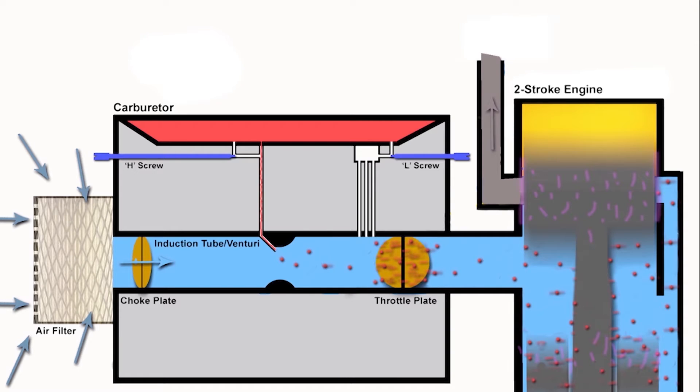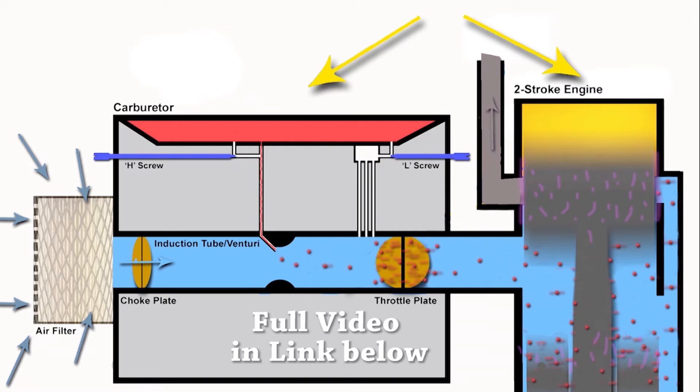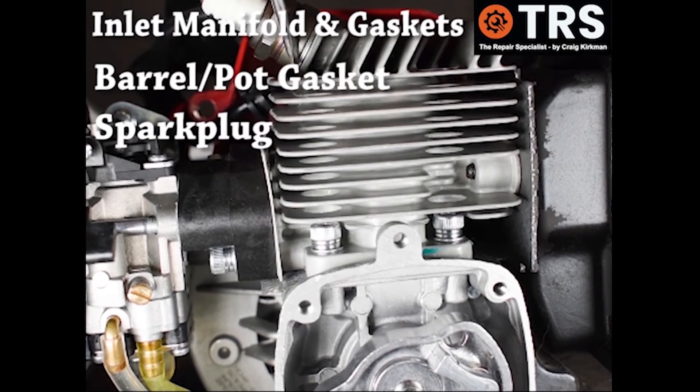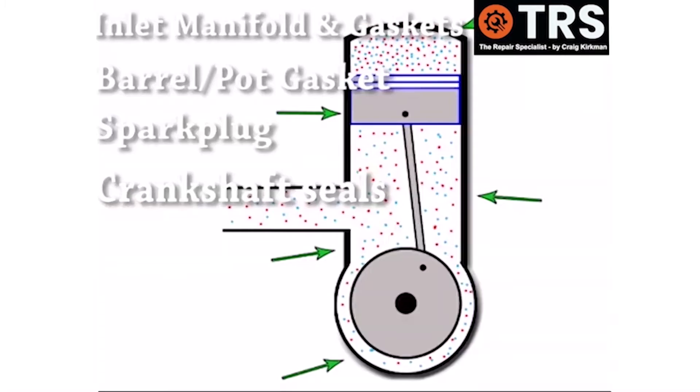So now we've established what lean fueling actually is. Incorrect fuel-to-air mixture settings can cause this kind of lean fueling problem, but that's not the only cause. Sometimes the carburetor can be working absolutely fine. Sometimes it can be an issue where the carburetor or the engine is drawing in too much air from a different place other than the induction tube.